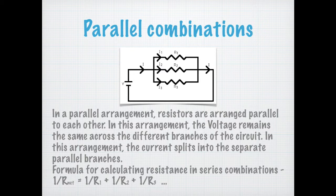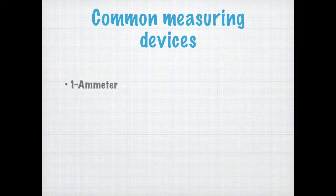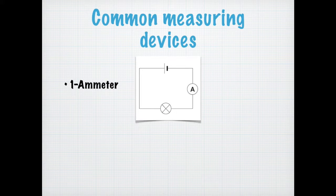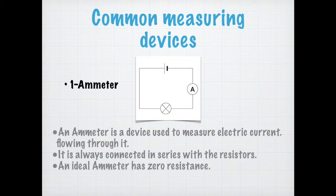Now let's move on to some common measuring devices for voltage and current. For now, we are going to use only two measuring devices: ammeters and voltmeters. Ammeters are the devices we use to measure current, and they are placed in a circuit in series, as shown in the diagram. Remember the symbol for ammeter from our previous video? You just use that symbol and place it in the circuit diagram. An ammeter is used to measure electric current.